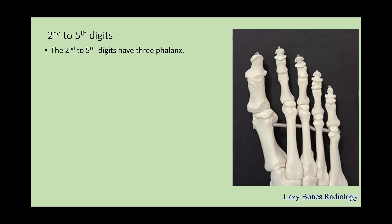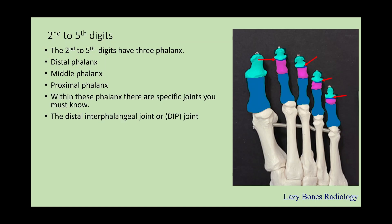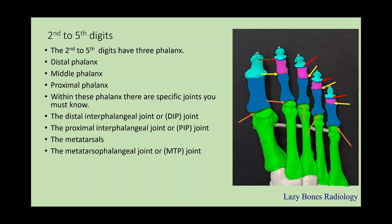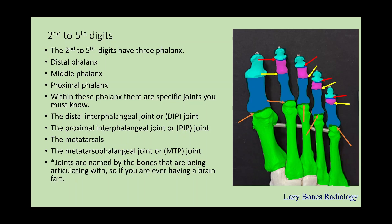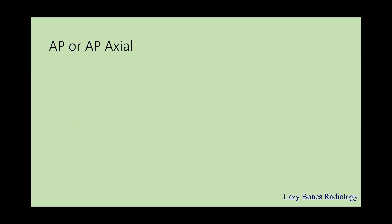Now let's move on to the second through fifth digits. Just like in the hand, the second through fifth digits have three phalanges: the distal phalanx, the middle phalanx, and the proximal phalanx. Within these phalanges, there are specific joints that you must know: the distal interphalangeal joint, also known as the DIP joint, and the proximal interphalangeal joint, also known as the PIP joint. Next, we have the metatarsals, and in between them we have the metatarsal phalangeal joint, or the MTP joint. Remember, joints are named according to the bones that are being articulated with. Please make sure that you review and be knowledgeable with all the anatomy, because knowing your anatomy is very important for the positioning. Let's begin.